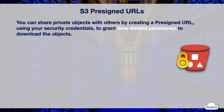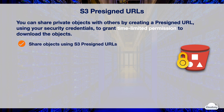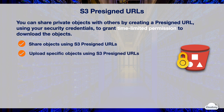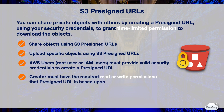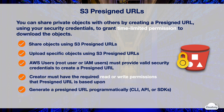You can also provide access to private S3 objects using S3 pre-signed URLs if you don't use CloudFront. By default, all objects are private and only the object owner has permission to access them. However, you can share private objects with others by creating pre-signed URLs using your security credentials to grant time-limited permission to download the objects. You can allow anonymous users to access or upload specific objects in an S3 bucket using pre-signed URLs. To create a pre-signed URL, the root user or IAM users must provide valid security credentials, and the creator must have the required read or write permissions that the pre-signed URL is based upon. For instance, a pre-signed URL can allow an anonymous user to upload an object only if the creator has permission to upload it. You can generate a pre-signed URL programmatically using the CLI, API, or SDKs, and use it multiple times before it expires.